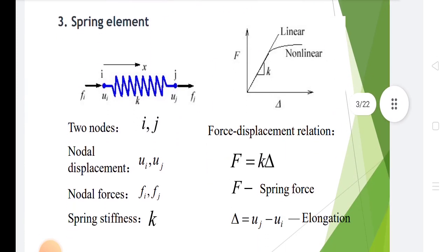In the spring element there are 2 nodes, with nodal displacement, nodal forces, and spring stiffness as the key quantities. The force-displacement relation is f equals k times delta, where f is the spring force.